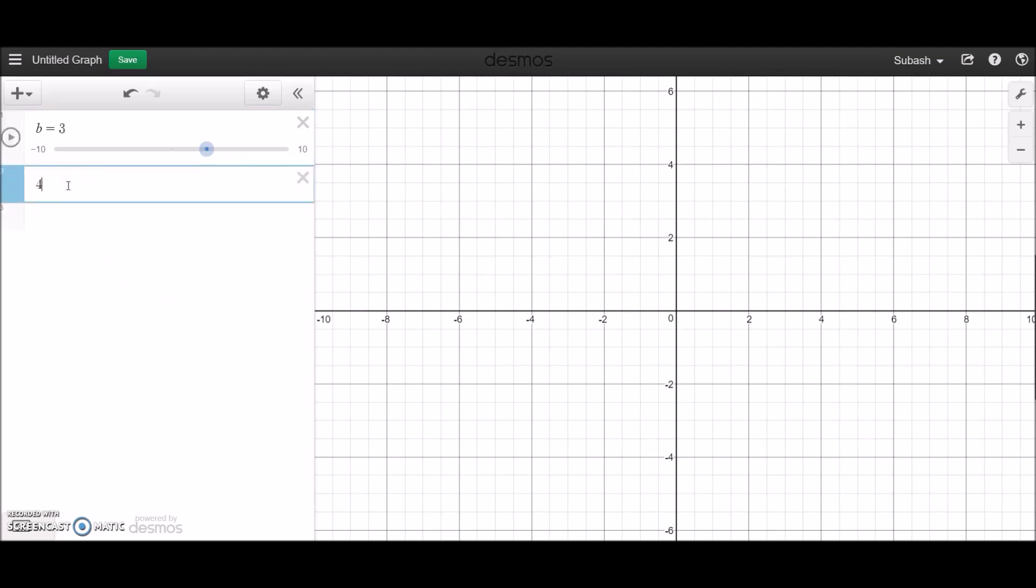So if you were to say something like 4 multiplied by b, then you can see that the answer is actually equal to 12.